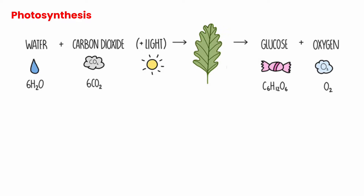In plants, the substances in leaves that absorb the light is called chlorophyll, and the chemical energy is stored in glucose or sugar. The reaction that occurs is that water — six H2O — reacts with six carbon dioxides, and they take the light energy and convert it into glucose, which is C6H12O6, as well as oxygen.